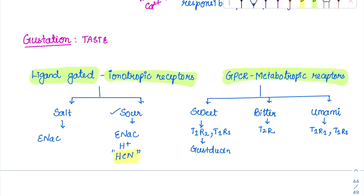For sweet taste, GPCRs with different transient receptors are involved. Sweet taste passes through T1R2 and T1R3. These are members of the T1R family, and they produce an intermediate called gustducin.